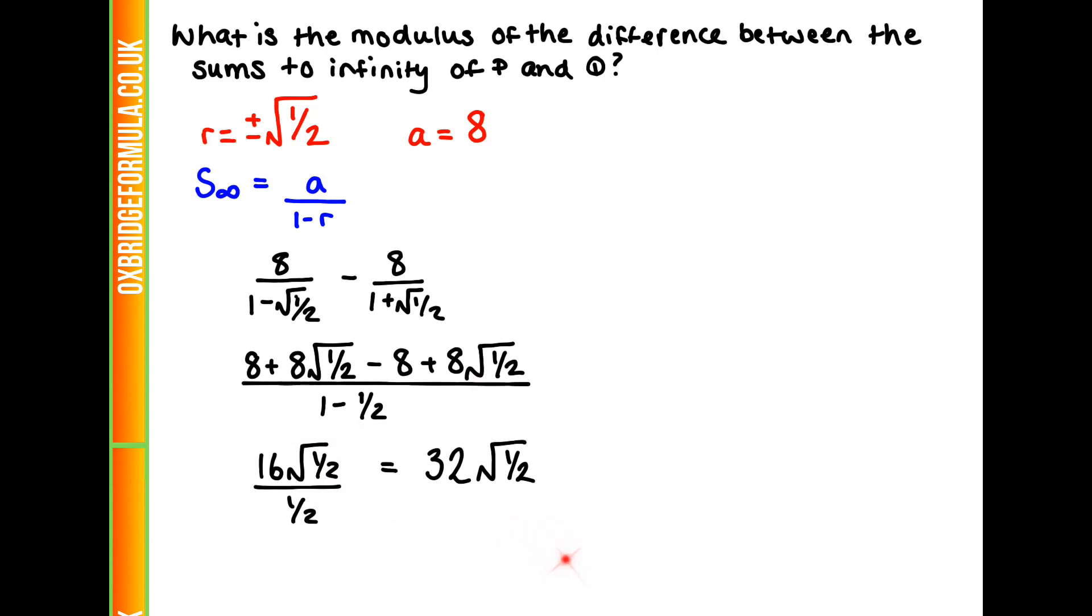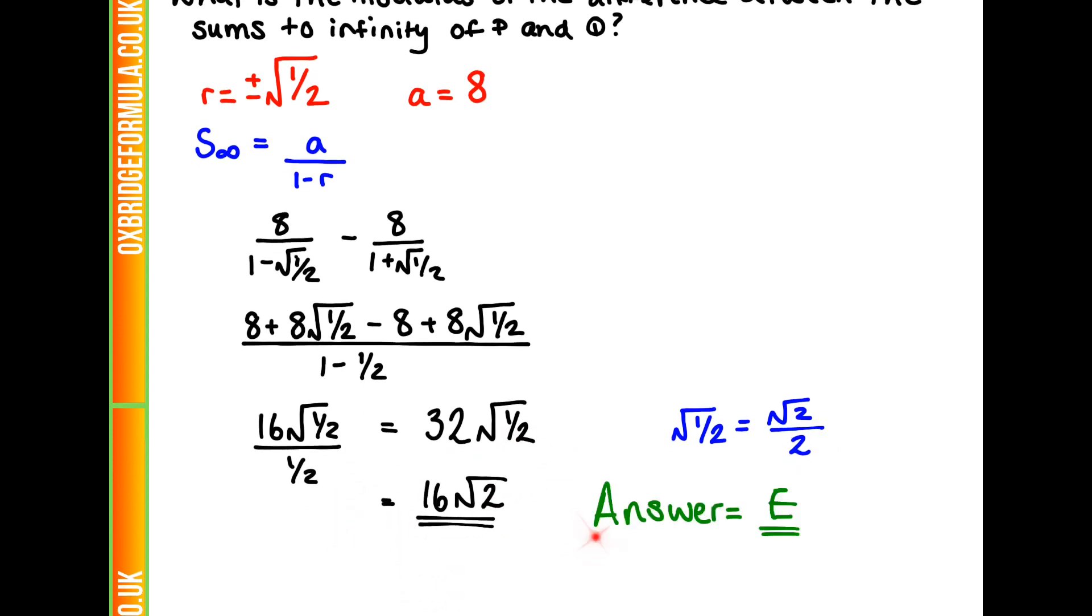Now, this is a right answer, but it doesn't look like any on our answer sheet. Can we simplify this down even more? Let's change this root of a half. What is this going to be equivalent to? Root a half is equivalent to root 2 over 2. We can substitute that into our answer and get the answer as 16 root 2 for an overall answer of e.